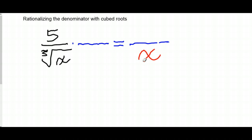just a plain x. Well, I have a cubed root, but x would be the same thing as cubed root of x cubed. So what I've got to ask myself is, what do I need to multiply cubed root of x by to get cubed root of x cubed?